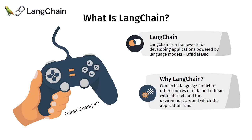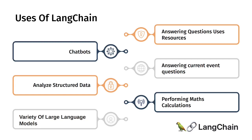LangChain can be used to build chatbots and also to analyze data. If you have structured data in a database, you can connect it with LangChain and a large language model like ChatGPT to query for any information. LangChain will use the help of ChatGPT or any LLM you're using to answer specific questions about your database. It supports a variety of large language models.